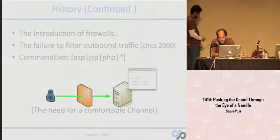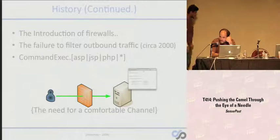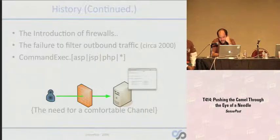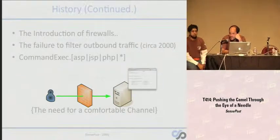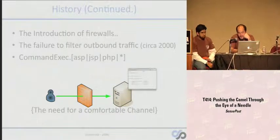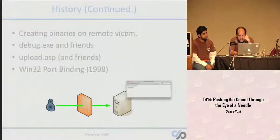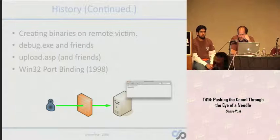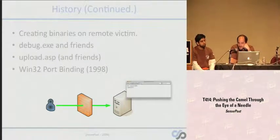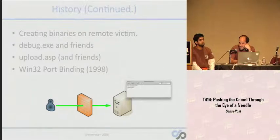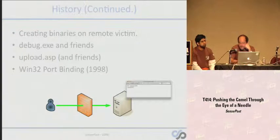People realized pretty quickly that that was a gaping flaw, so firewalls were deployed that would prevent inbound traffic. But for a long time outbound traffic was still allowed, so we saw a plethora of tools being developed — mostly supporting command execution through websites, the upload of some kind of web shell. If outbound traffic was allowed through the firewall, you could easily set up your Netcat and once again get to a pretty comfortable place. That continued with the creation of binaries on the machine using debug.exe on Windows to write out binaries, or specific upload pages. We also saw the notion of binding in front of open ports around 1998.